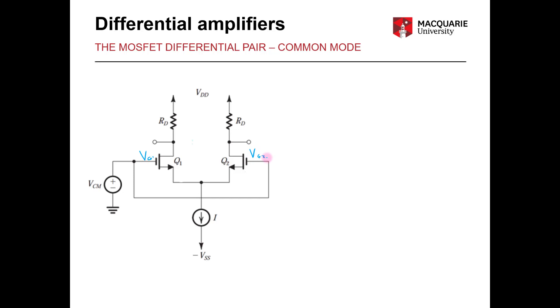So straight away we can say that our input VG1 is equal to VG2 which equals VCM. What we're interested in here is finding out how the circuit responds to that common mode input.